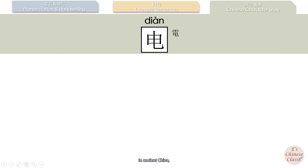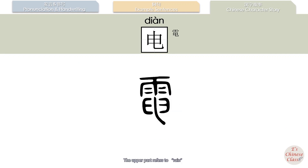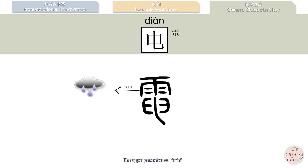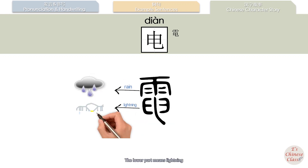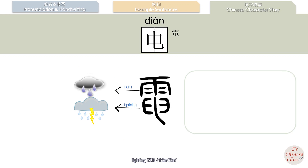In ancient China, 电 was written in an older form. The upper part refers to rain, the lower part means lightning. So the original meaning of 电 is lightning — 闪电. In modern Chinese, 电 means electricity.